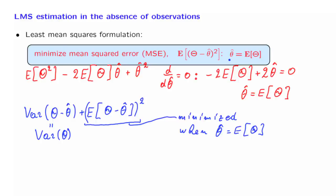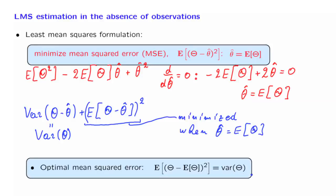Once we adopt this particular estimate, the mean squared error is going to be equal to the variance of theta, because we recognize that this is the variance. So the variance of theta is the least possible value of the mean squared error that we can obtain using any particular estimate. This is our final conclusion, and in the next segment we will exploit these conclusions and apply them to a more general situation.